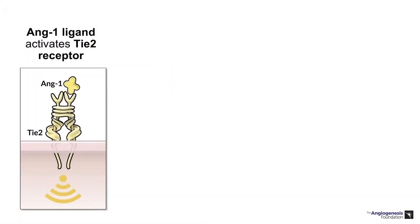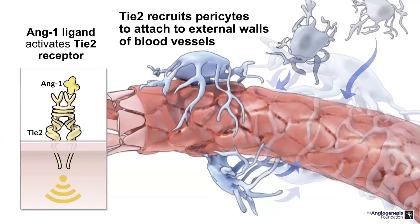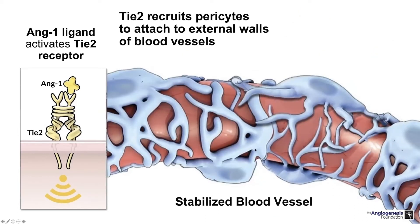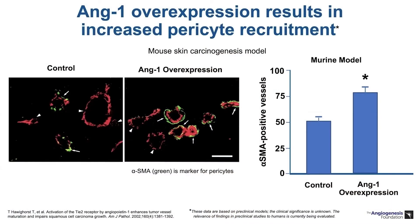When the angiopoietin 1 ligand is bound to TIE2, you can see intracellular signaling activated. We know that when that happens, TIE2 then recruits pericytes to attach to the external walls of the blood vessel, leading to stabilization of blood vessels. In a mouse skin carcinogenesis model, angiopoietin 1 overexpression results in increased pericyte recruitment—as levels of angiopoietin 1 are elevated relative to angiopoietin 2, you're more likely to have pericytes supporting and nourishing your endothelial cells.